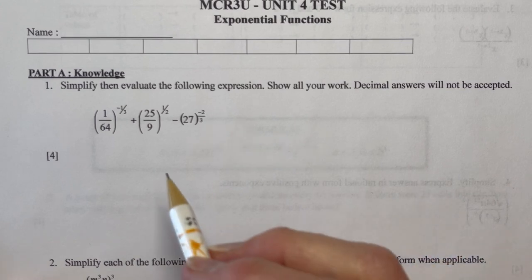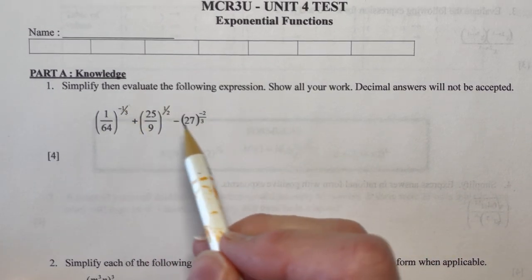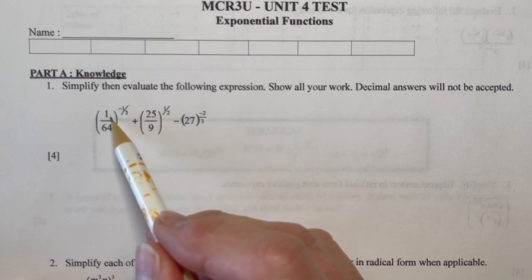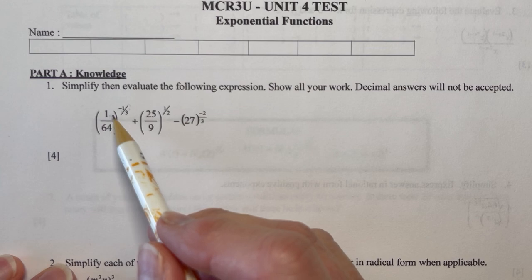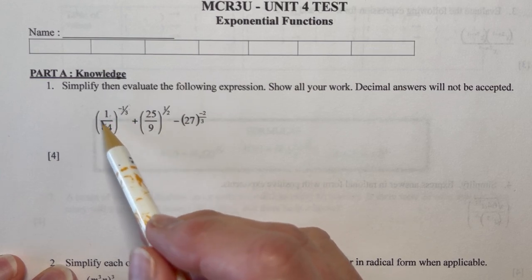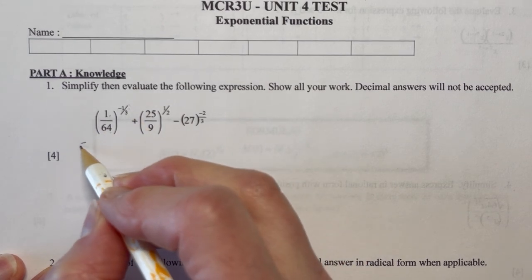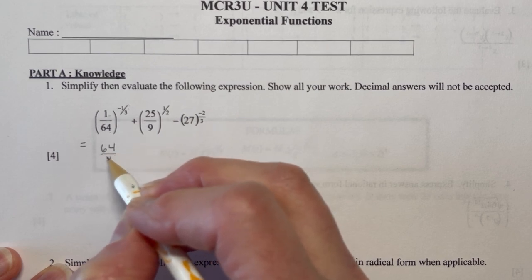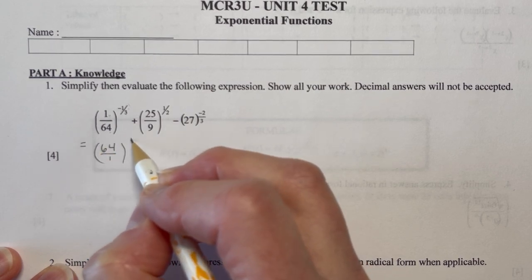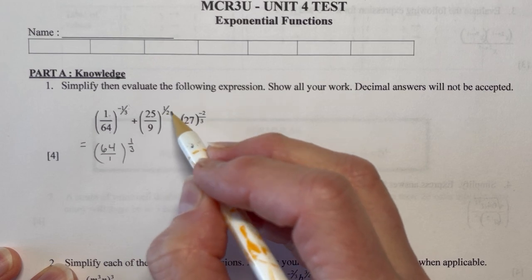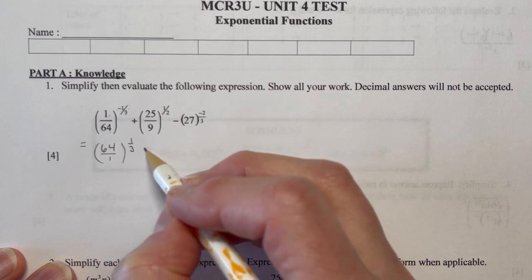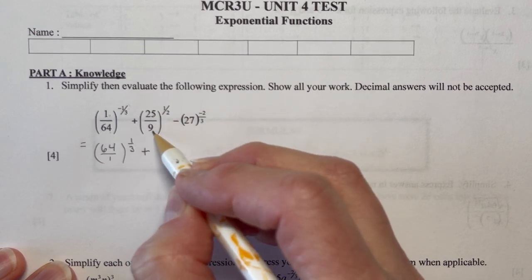So the first thing I would do when I look at this, you see this is a negative exponent here and a negative exponent here. This one in particular, because this is a fraction, I can make this into a positive exponent by flipping the fraction. So that's one of the key things I would do first. So I would write this as 64, you can put it over one if you want, to the one third. And this one I'm going to evaluate as I get to it because I know the half power is the square root. So I'm adding the square root of 25 over 9.